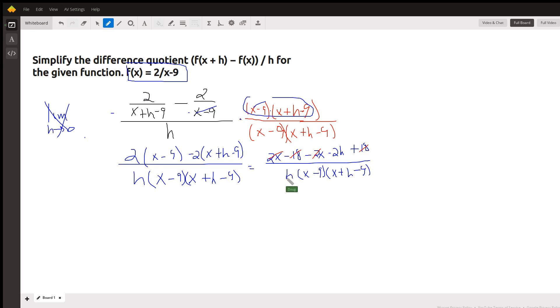When we simplify the numerator, the 2x and the minus 2x combine to zero, same for the minus 18 and the plus 18. We're left with minus 2h, but the h in the numerator cancels out with the factor of h in the denominator, so we've got minus 2 over x minus 9 times the quantity x plus h minus 9.